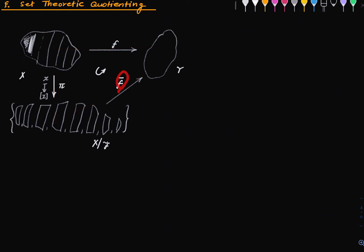The point of all this is that there is a unique map f-bar from the set of all non-empty fibers to Y such that this diagram commutes. That means whether you start with a point here and apply f, or you go via this two-road route, you will always land on the same thing.